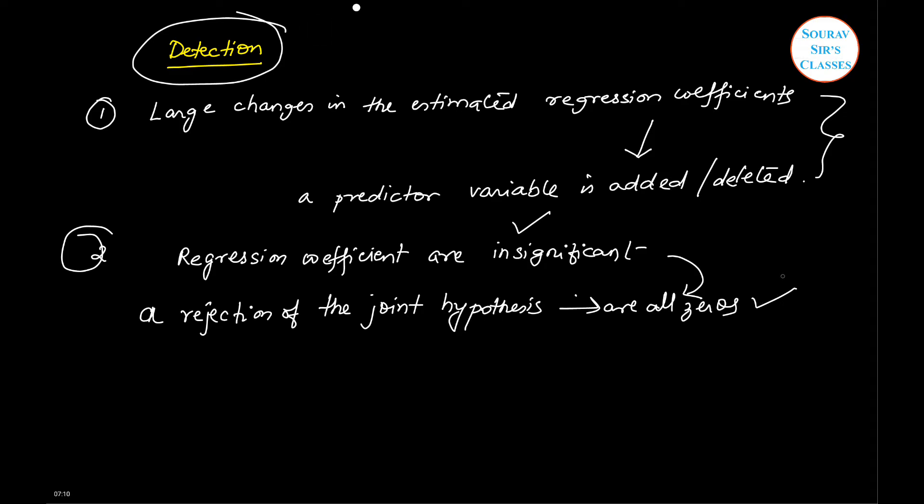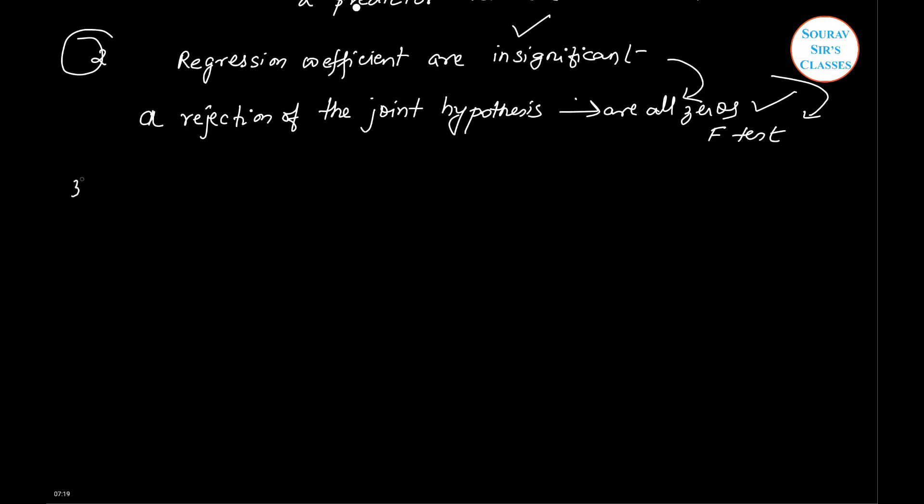Number three is the VIF. VIF is a formal detection tolerance.